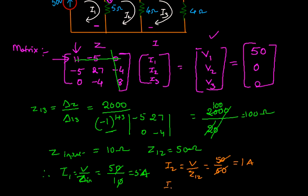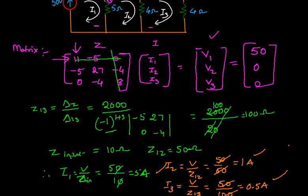If I want to find out i3, therefore V by z13, that is equals to 50 by 100, then it is equals to 0.5 amperes. These are the 3 currents we can get from mesh analysis. Thank you.